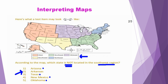When answering questions that require you to use your comprehension and interpreting skills as they relate to understanding a map, you want to make sure that you read your map key and apply your key to your map so that you can understand what the map is conveying. Then reread your question, identify the key terms, and answer the question to the best of your ability.